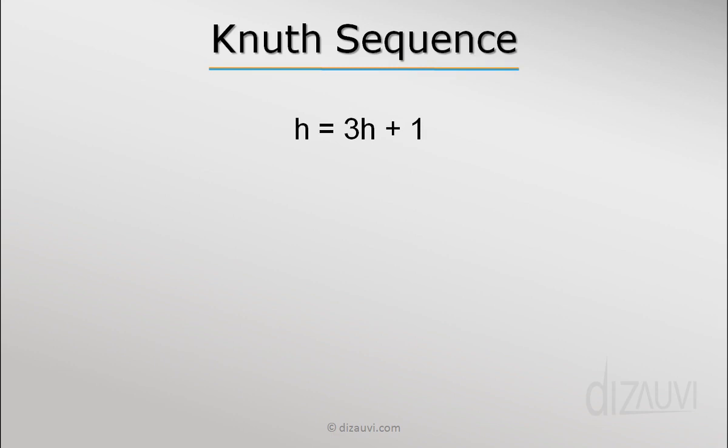We would start by choosing the value of h as 1, and then the next value of h will be 4, then 13, then 40, then 121, all the way up to a point where h is less than the length of the array.